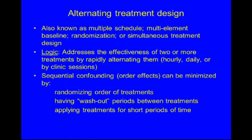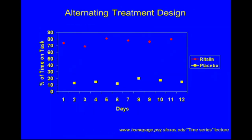The alternating treatment design — also known as multiple schedule, multi-element baseline, randomization, or simultaneous treatment design — addresses the effectiveness of two or more treatments by rapidly alternating them, either hourly, daily, or by clinic sessions. Sequential confounding or order effects can be minimized by randomizing the order of treatments, having washout periods between treatments, and applying treatments for short periods of time. In a hypothetical study of time on task in a young person with ADHD, alternating Ritalin and placebo showed much higher time on task during the Ritalin phase.